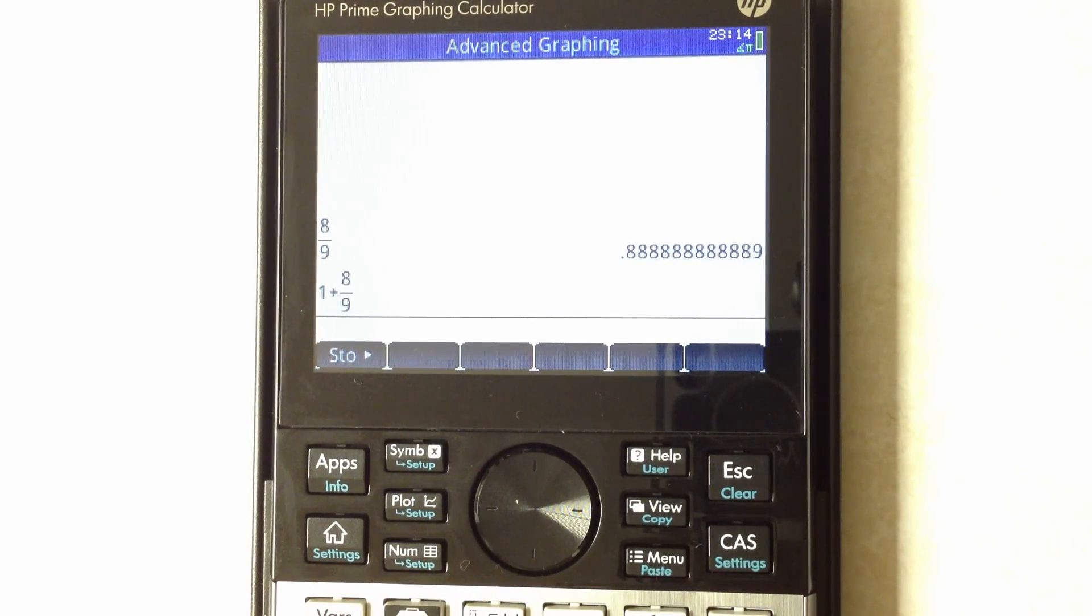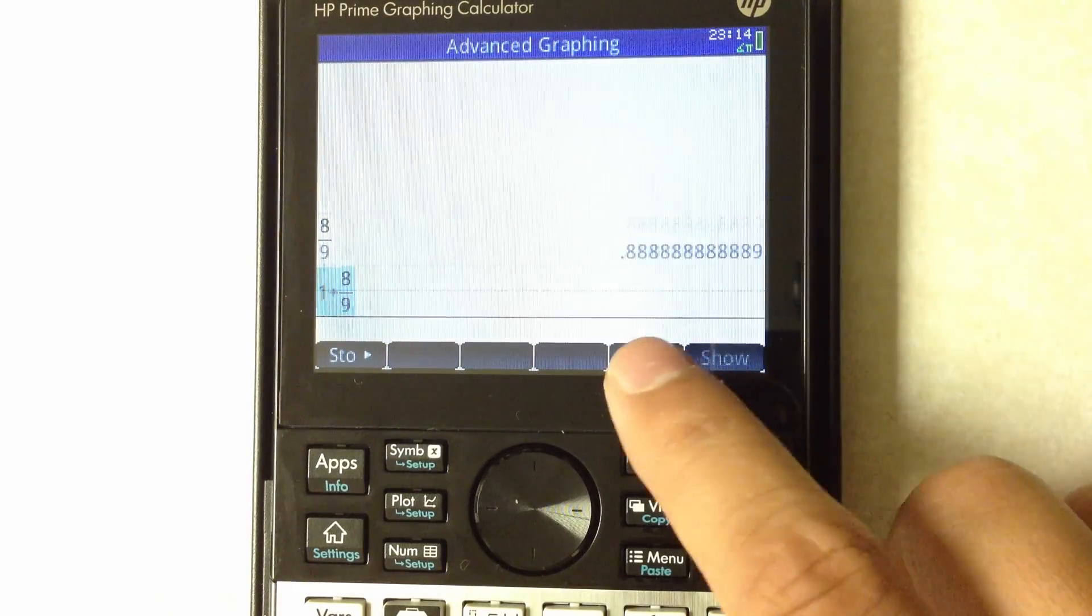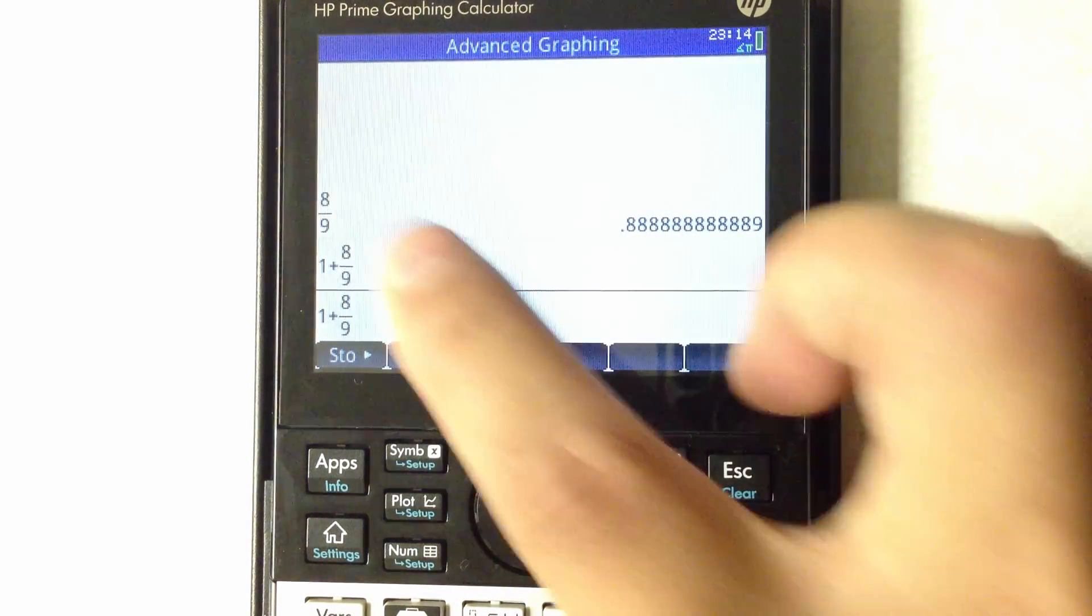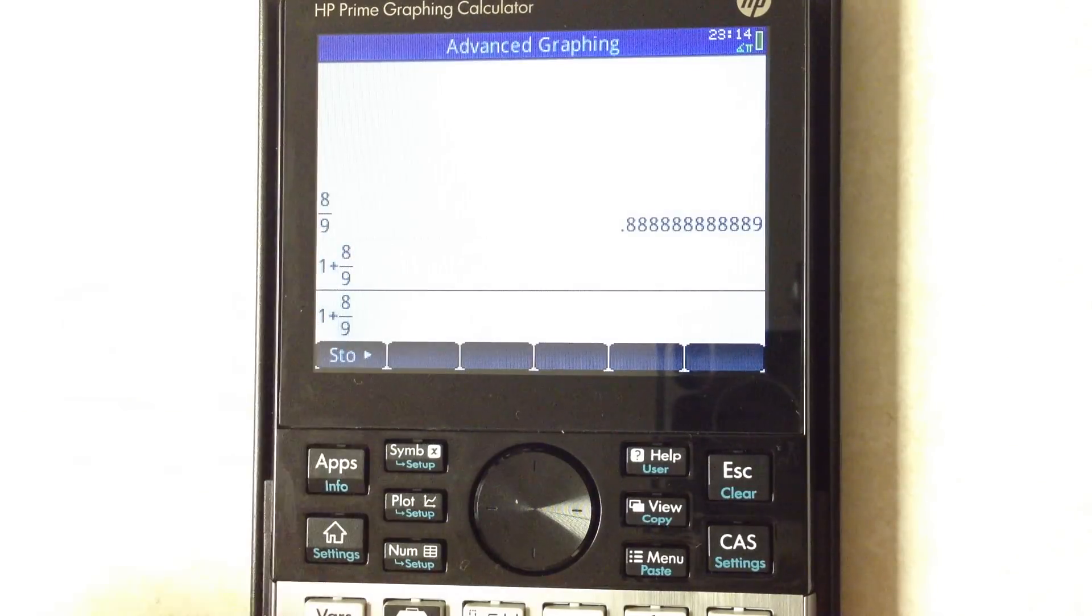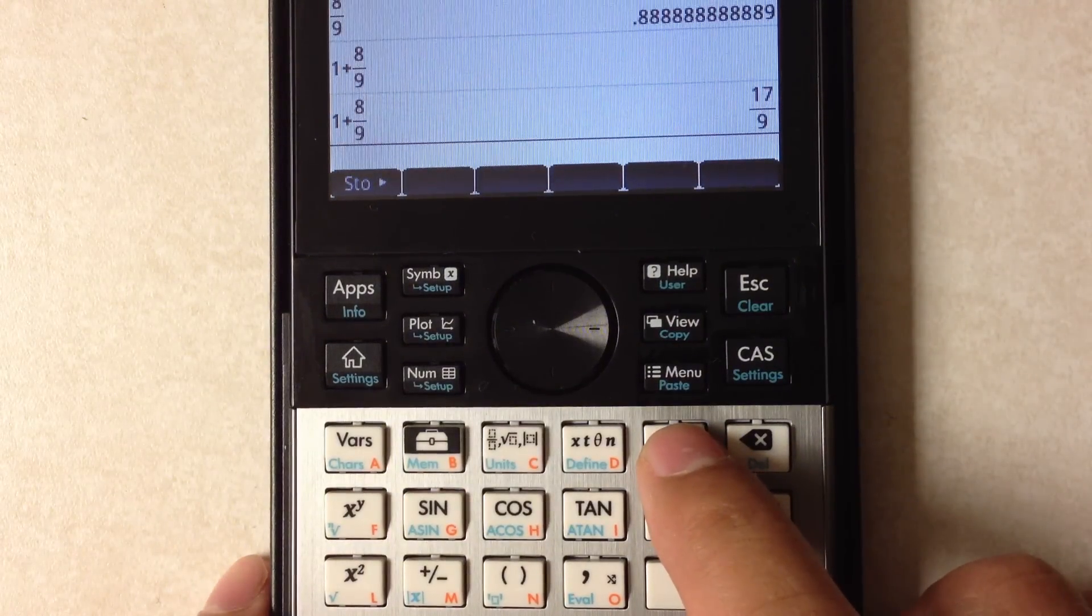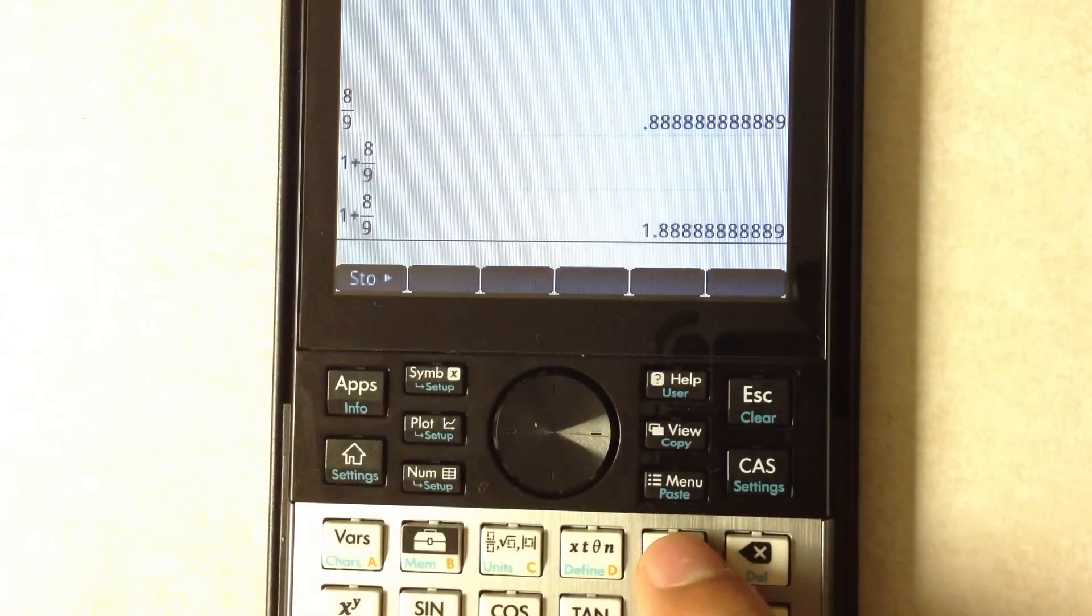If I switch over to the non-CAS screen and copy this - cool feature, touch screen - so I just touched that input up here, it copied it down here. Let's hit enter and try that button one more time. So it toggled to 17 over 9, hit it one more time and it toggles into mixed fraction mode and then back to decimal mode.